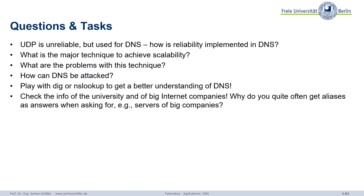Some final questions: we use UDP for DNS — it's unreliable. How do we implement reliability? How do we achieve scalability — what's the major technique, and what are the problems with it? What else can we do to attack DNS? Please use dig and NSLOOKUP to get a better understanding. Check your favorite URLs, your own university, big internet companies. And why do you quite often get aliases as answers when you ask for servers? What was the idea of those aliases?